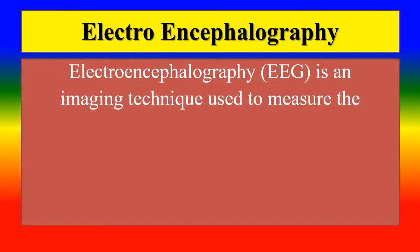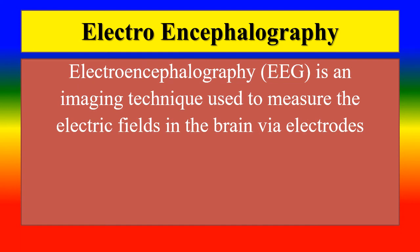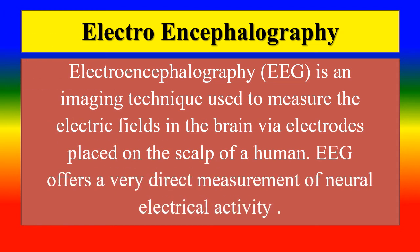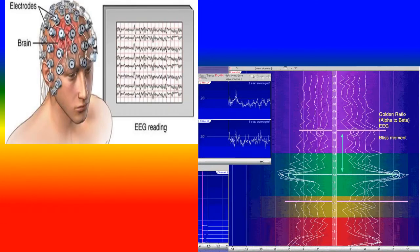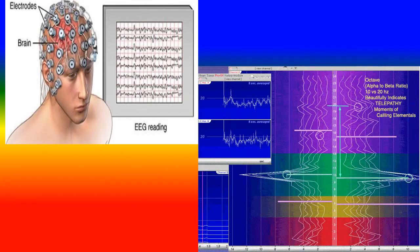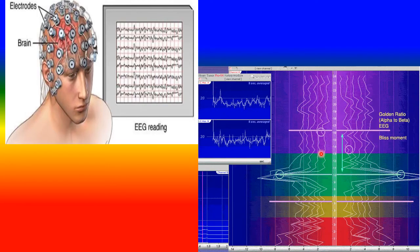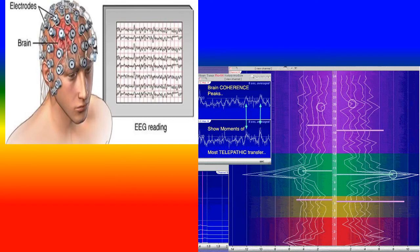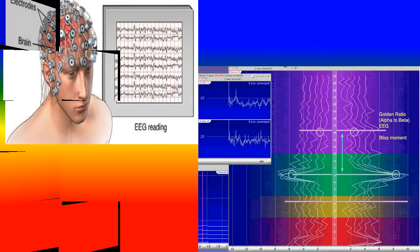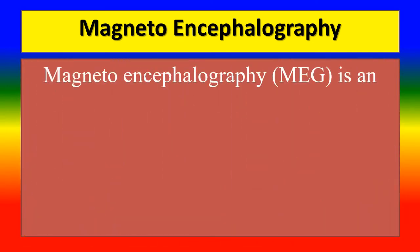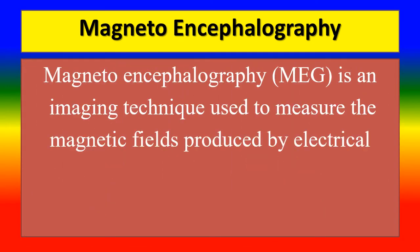Electroencephalography, or EEG, is an imaging technique used to measure the electric field in the brain via electrodes placed on the scalp. EEG offers a very direct measure of neural electrical activity. An EEG reading graphically represents the brain's activity.